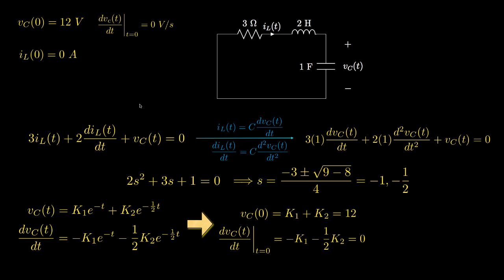Our initial conditions state that VC at t equals zero is 12, and the derivative of the capacitor voltage at t equals zero is zero. These two equations in the unknowns K1 and K2 allow us to solve for K1 equals negative 12 and K2 equals 24.